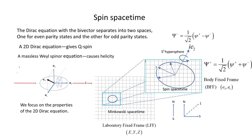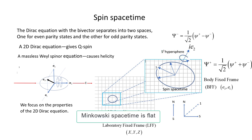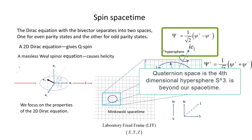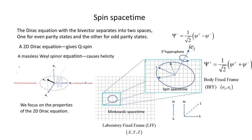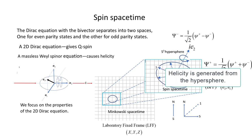Spin spacetime breaks up into two spaces: the 2D plane of polarization of even parity states, and the S3 hypersphere for the quaternions that spin the axis, and these have odd parity. Since the gravity of a tiny spin is negligible, Minkowski spacetime is flat. The anti-de Sitter space of quaternions is not in our spacetime, but in the fourth dimensional hypersphere, S3. We cannot see it all. All we can see is the stereographic projection of the spinning 2D plane. We cannot observe the full quaternion space, but this treatment shows that nature extends beyond our dimensions. The spinning is generated from the hypersphere.